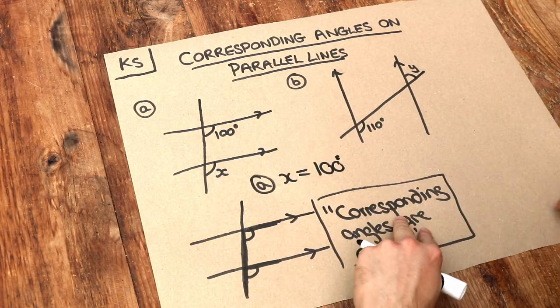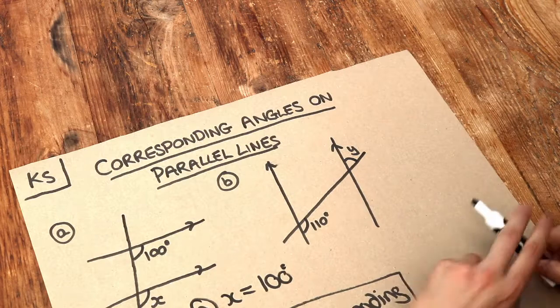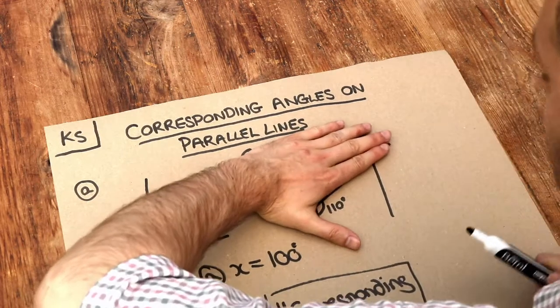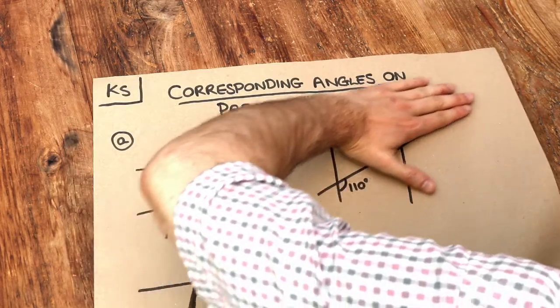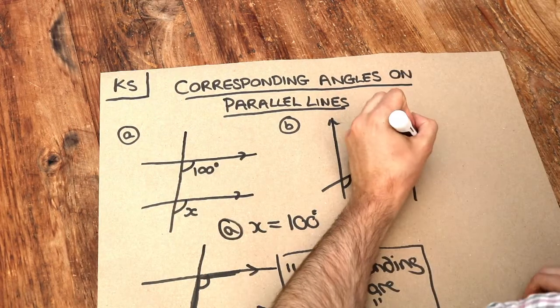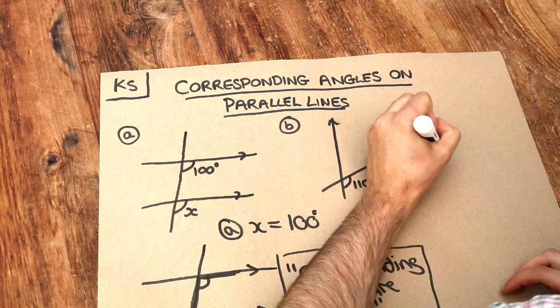Now with B, we've got two steps here. Can you see we've got this 110 degrees here? Now if I shift my hand from one parallel line to the other like this, can you see that that angle is also going to be 110?